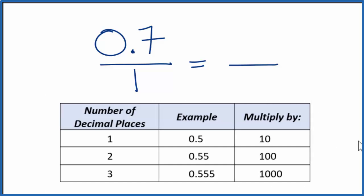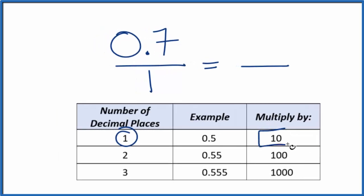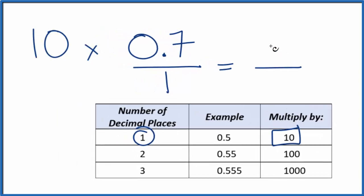Next, 0.7 has one decimal place here, just one. So when we have one decimal place, we're going to multiply by 10. 10 times 0.7, that's 7. So now we have a whole number.